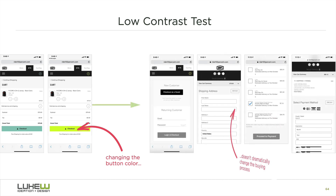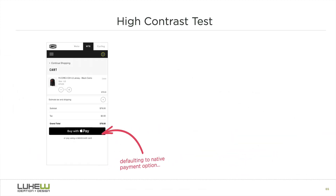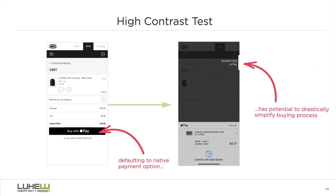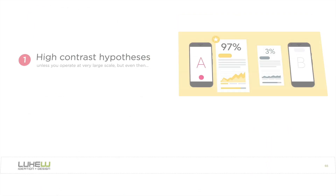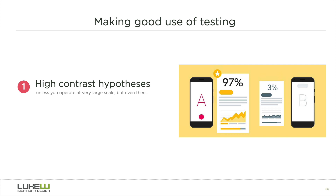The payment method change is higher contrast because it can completely alter the buying flow — shifting it from a multi-step, form-based process to a single double-tap with biometric authentication. So one way of making good use of testing is to try bigger, bolder ideas, ones that have higher risk-reward ratios.